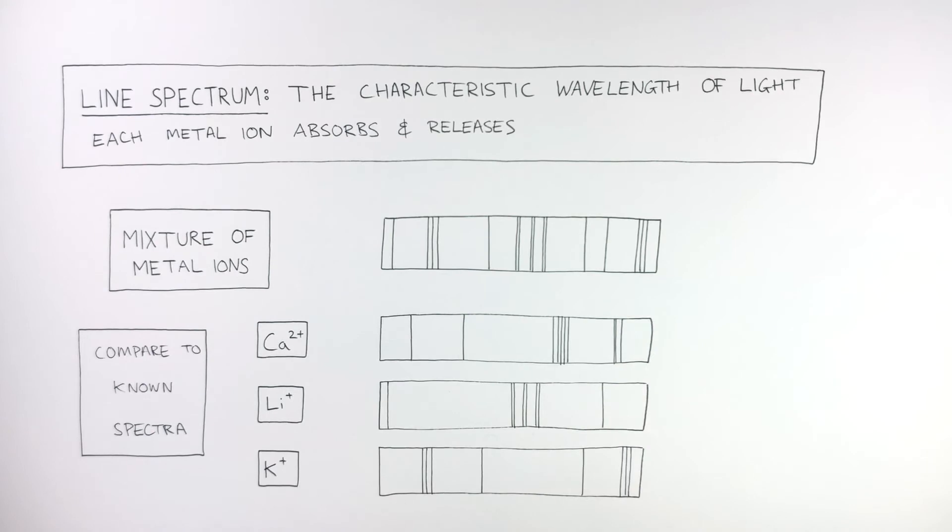If lines in the line spectrum match up perfectly with the pattern of lines from a known metal ion, like here and here, that metal ion is present in the mixture.